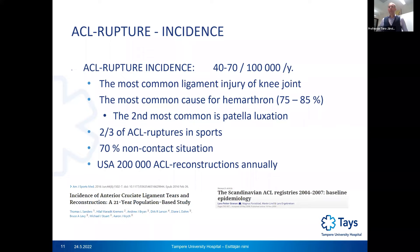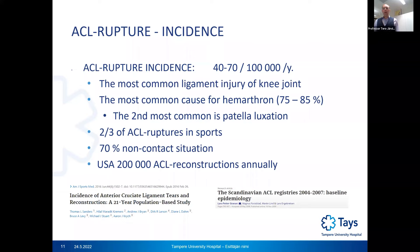The incidence of ACL rupture is very common: 40 to 70 ACL ruptures take place annually per 100,000 people. It is the most common ligament injury of the knee joint and the most common cause of hemarthrosis. If a patient has hemarthrosis in the knee joint, there is a 75 to 85 percent probability that ACL rupture is the cause. Patellar luxation is the second most common reason.